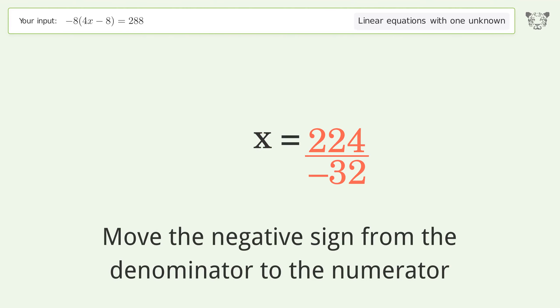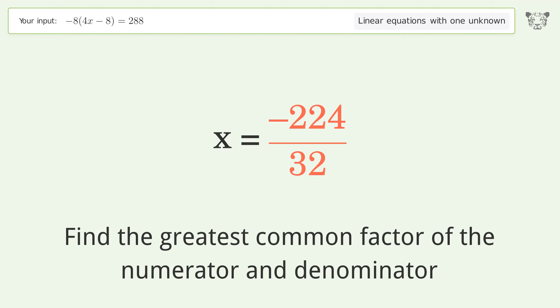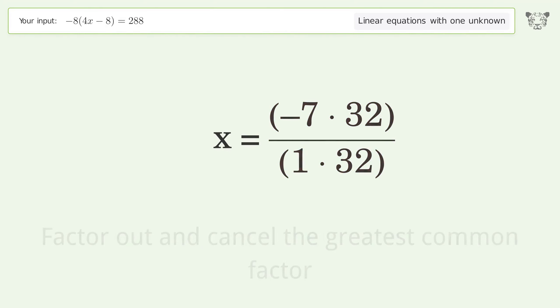Move the negative sign from the denominator to the numerator. Find the greatest common factor of the numerator and denominator. Factor out and cancel the greatest common factor.